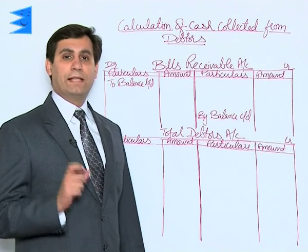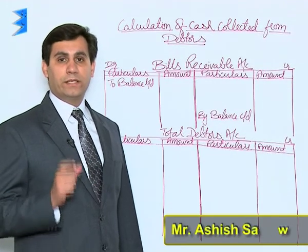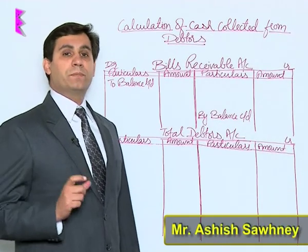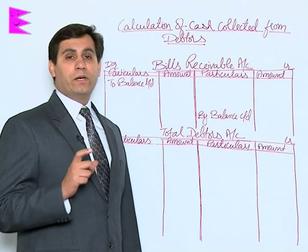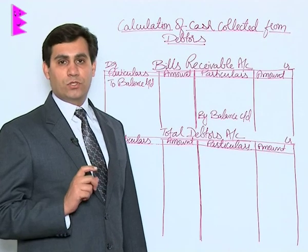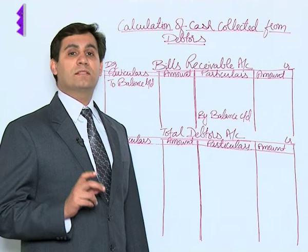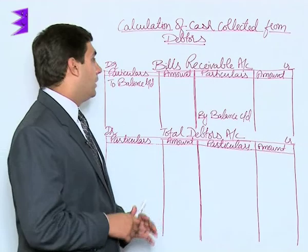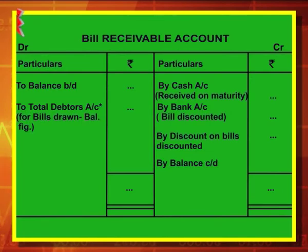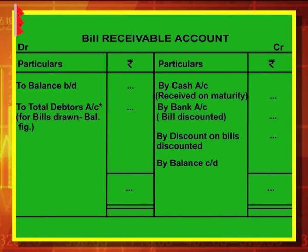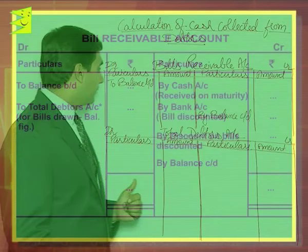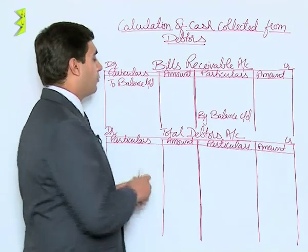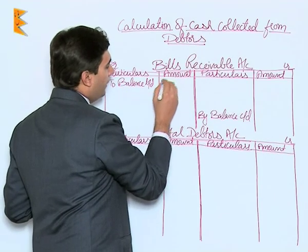Let us understand how we calculate cash received from debtors. For this purpose, always remember: if bills receivable are given in the question, debtors and bills receivable accounts are prepared simultaneously. The format is a T-shape — with particulars and amount on the debit side and particulars and amount on the credit side. The opening balance is bills receivable balance brought down.